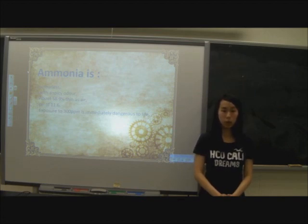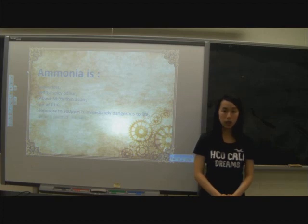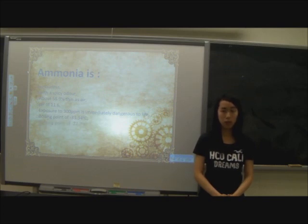Ammonia has a boiling point of negative 33.34 degrees Celsius, so it must be kept at low temperature or at high pressure. And it has a melting point of negative 77.7 degrees Celsius.